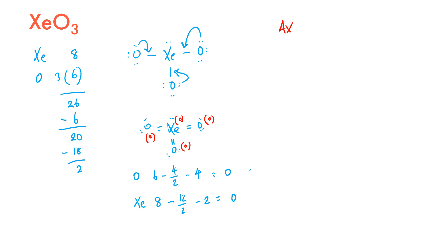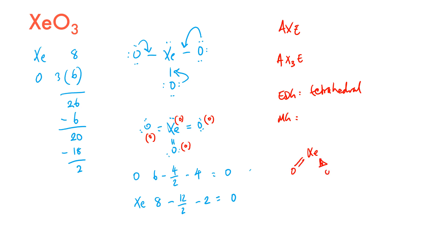Using AXE notation: A is xenon, X₃ are the 3 oxygens, and E₁ is the lone pair, giving AX₃E with an electron domain geometry of tetrahedral. The molecular geometry is trigonal pyramidal (pseudo-tetrahedral), with the double-bonded oxygens and one lone pair, giving bond angles of approximately 109.5 degrees.